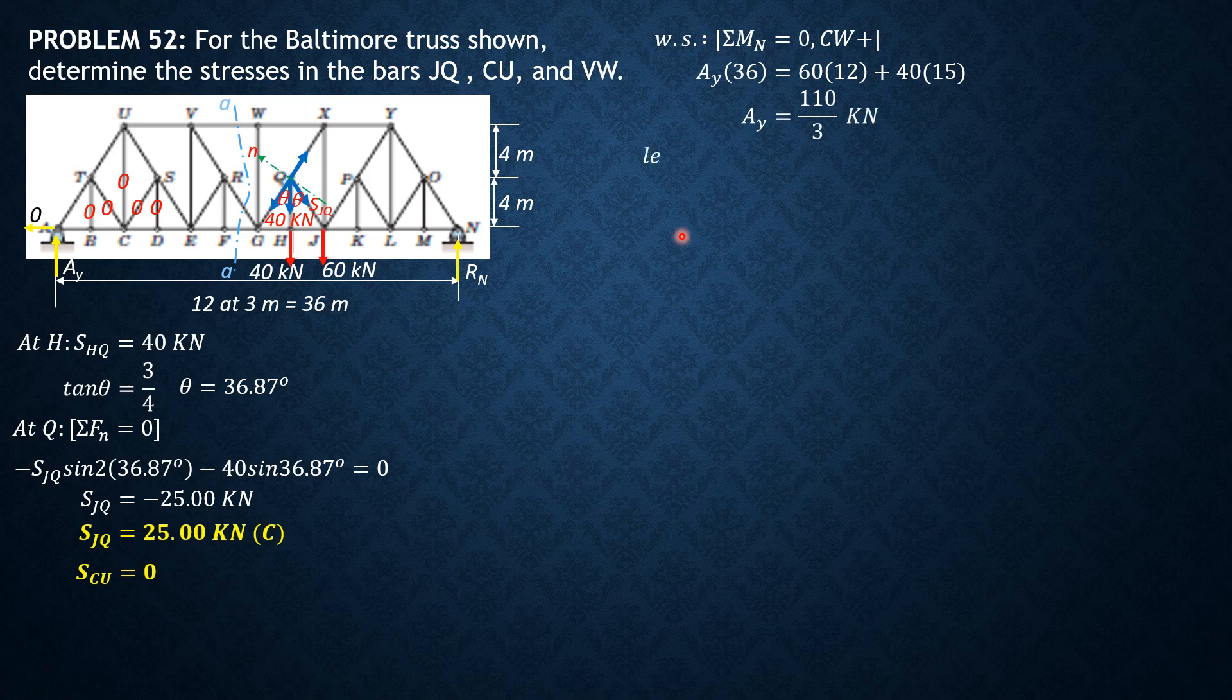Then considering forces to the left of section, summation moment about G equals 0, clockwise positive. These are the forces involved. I will only name VW because that's the only force involved when we sum up moment about G, aside from AY.